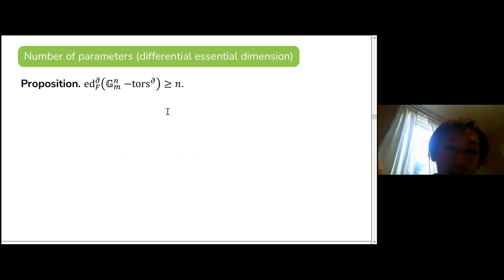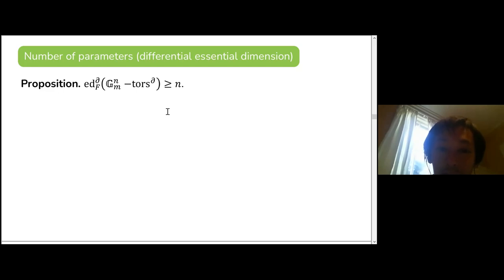Now let's look at another example: differential torsors with group G = G_m^n. The claim is that you need at least N parameters to describe them.